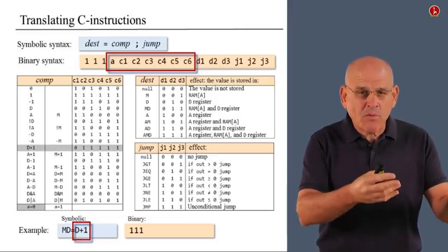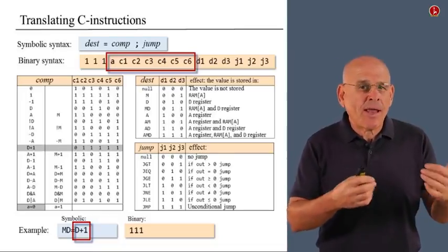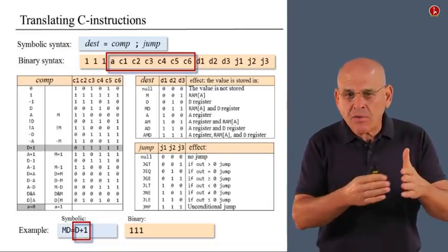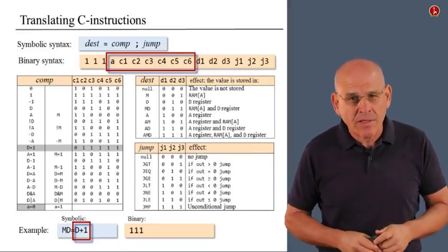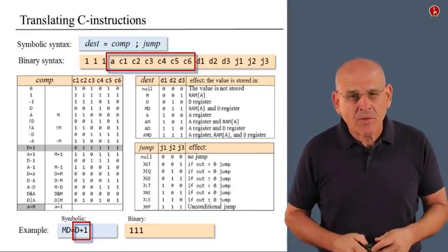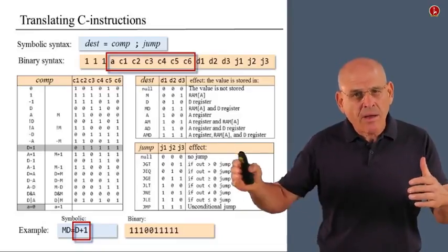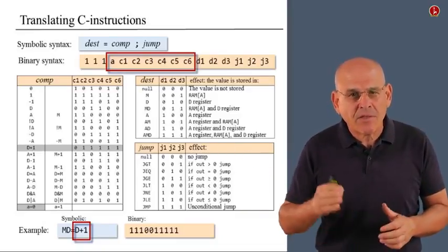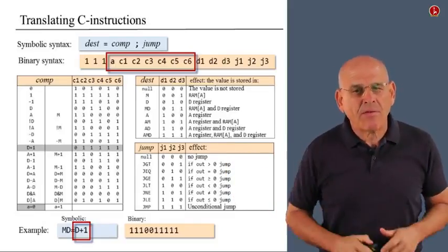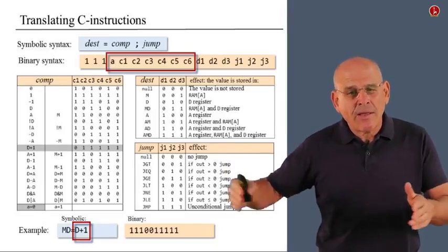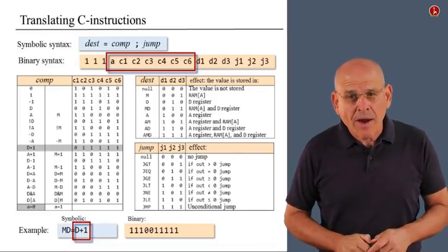I look up this mnemonic. And I see that it corresponds to an A bit, which is 0, and to 6 control bits, which are 0 and 5 1s. So putting these bits together, I generate the 7 bit value 0, 0, 1, 1, 1, 1, 1. And I append it to the string that I gradually build here.